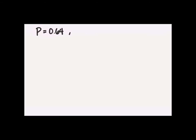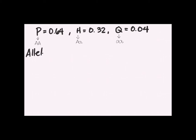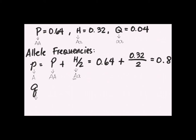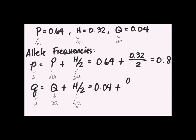If we are given the genotypic frequencies of a certain population, we can calculate the allele frequencies. P is the frequency of the homozygous dominant, H is for the heterozygous, and Q is for the homozygous recessive. To calculate lowercase p, we add uppercase P to H divided by 2. We divide H by 2 because the heterozygous genotype has only one copy of the uppercase A allele. The same logic applies for calculating lowercase q, which represents the frequency of the lowercase a allele — H is again divided by 2 because the heterozygous genotype has only one copy of the lowercase a allele.